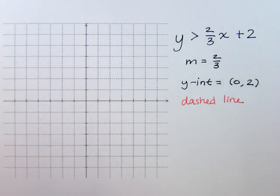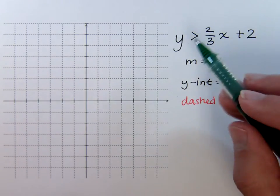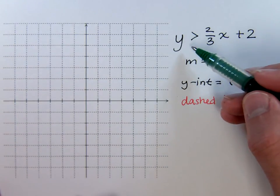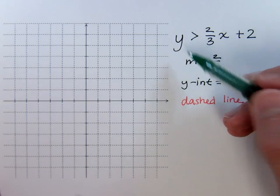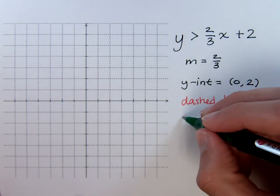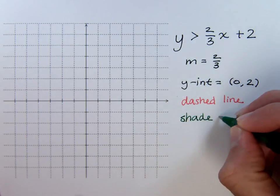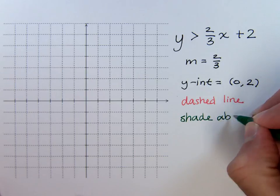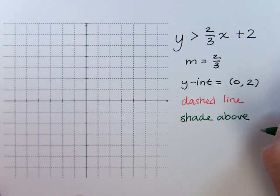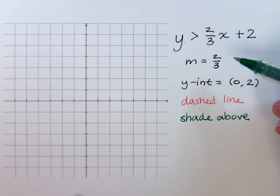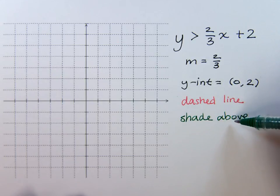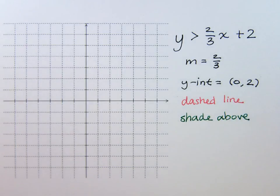Also, we see that this equation has already been solved for y. Since it says y is greater than, that means we need to shade above the line that we graph. So with these four pieces of information — slope, y-intercept, dashed line, and shading above — it shouldn't be that difficult for us to graph. So let's go ahead and get started.